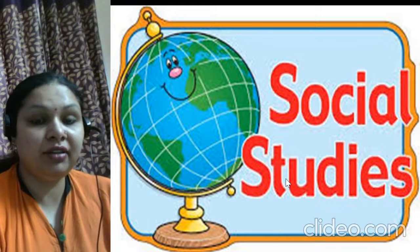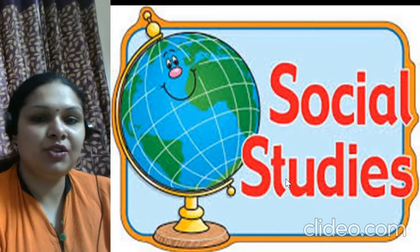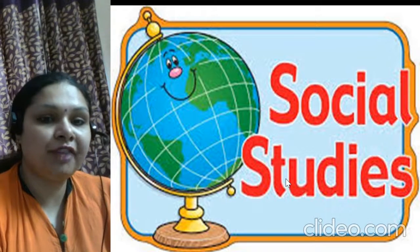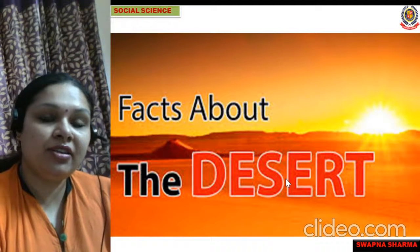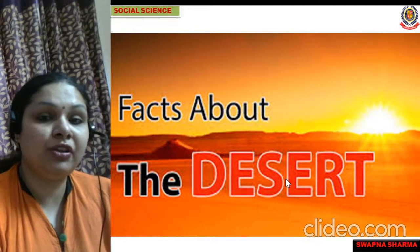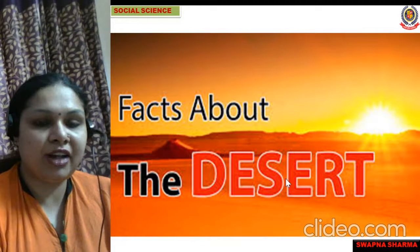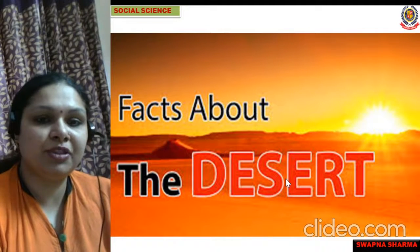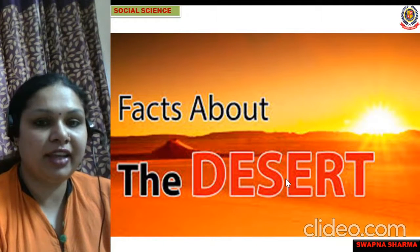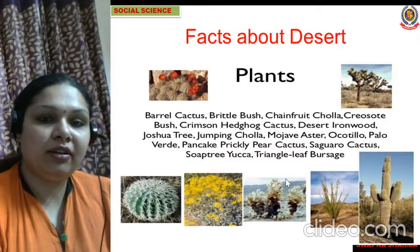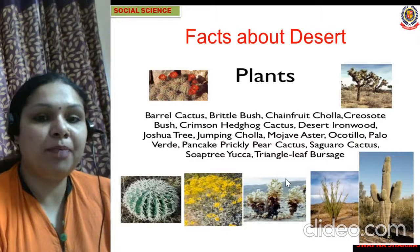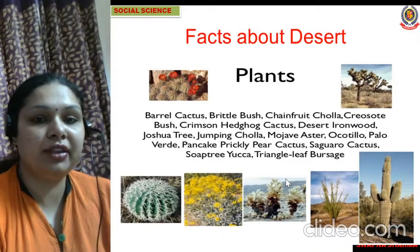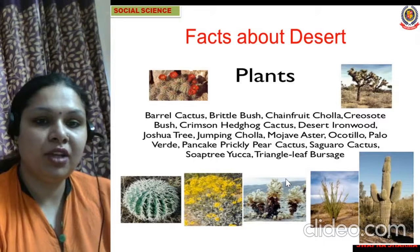As we are having our social science class, I would like to share one interesting fact with you all. The interesting fact will be about the desert, because right now we are studying Chapter 4 - The Western Desert of India. The fact I would like to share is about the plants which grow in the desert region.